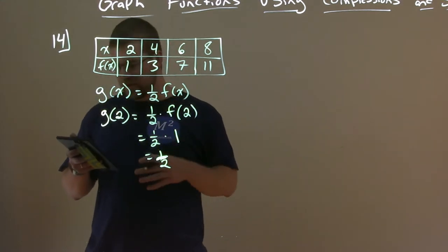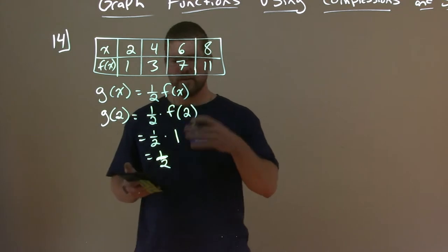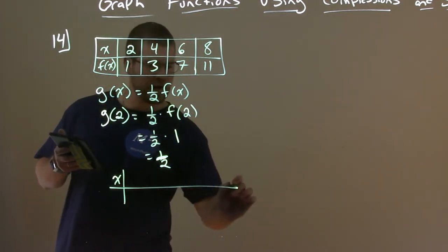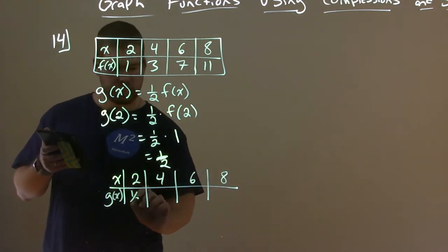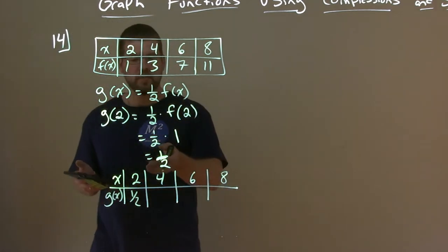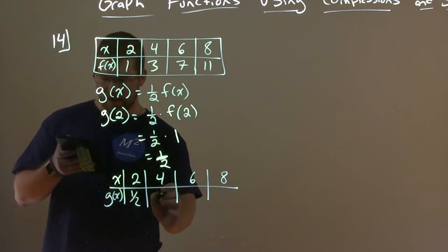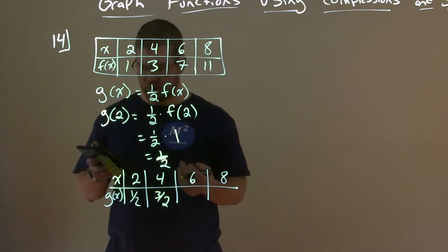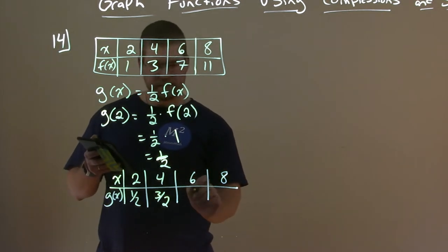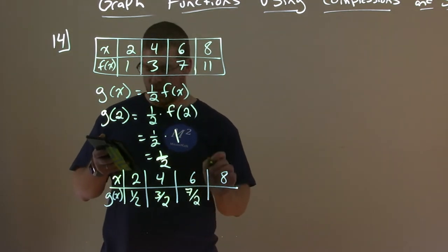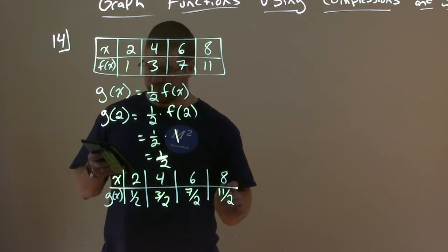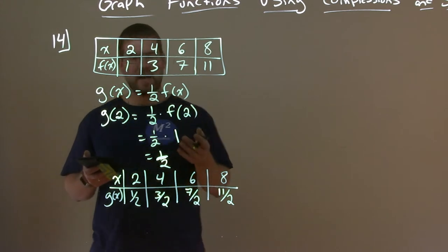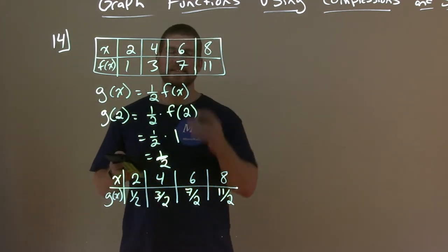With that information, we can make a table. We're going to keep multiplying by one half. When x is 2, g of x is one half. When x is 4, g of x is three halves. When x is 6, g of x is seven halves. And when x is 8, g of x is eleven halves. Now we have a table for g of x, which is a vertical compression of f of x.